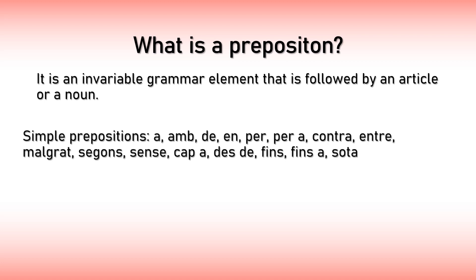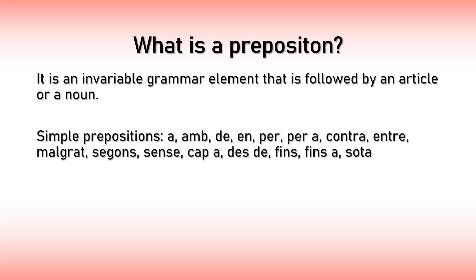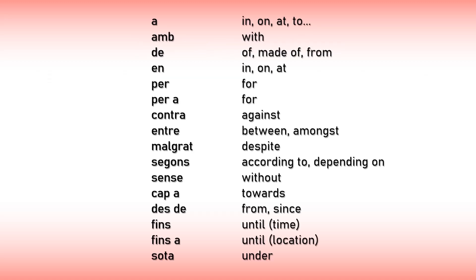This is a list of the most simple and common prepositions in Catalan. Of course there are more, but they are usually compositions of these that you see. These are again their most common translations, but as you can see some of them have different ones because they are very broad — that is a problem with prepositions. Sometimes you just have to learn them by heart. In this video we will only see in depth the first five or six, as these are the most common ones, and it is a beginner video for learners who are still amateurs in this language.